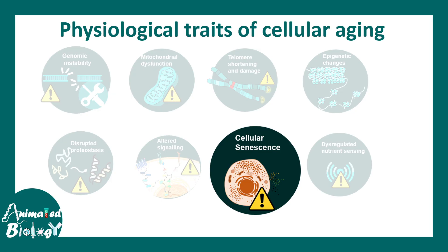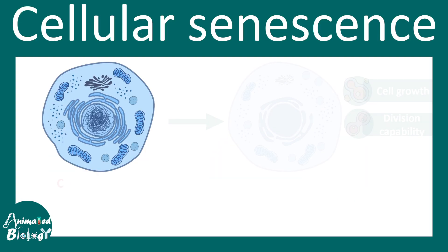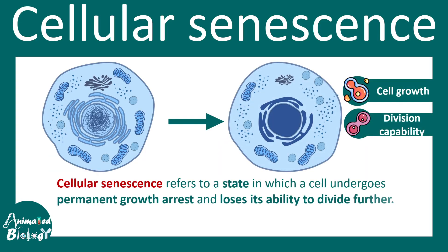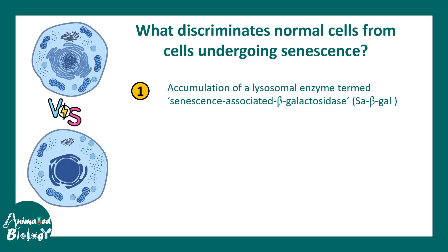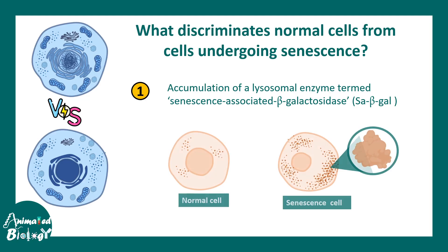Now let's talk about another important cellular driver of aging: cellular senescence. Senescence is a state of the cell where the cell undergoes permanent growth arrest and loses all capability to divide further. Cell growth and division capability is severely compromised in this cellular state. One hallmark of senescence is accumulation of the lysosomal enzyme termed senescence-associated beta-galactosidase, which is a very prominent feature of senescent cells.